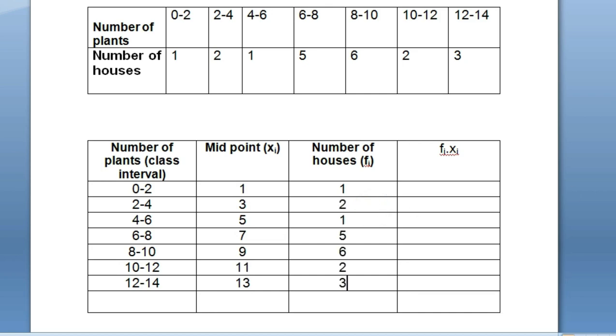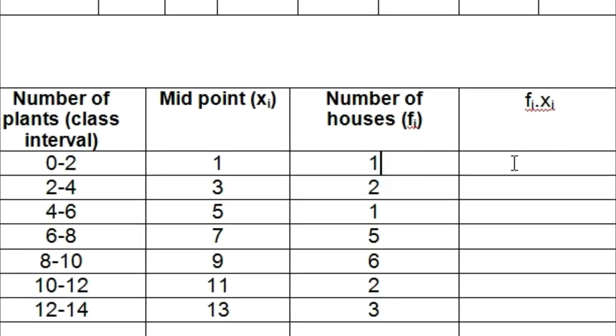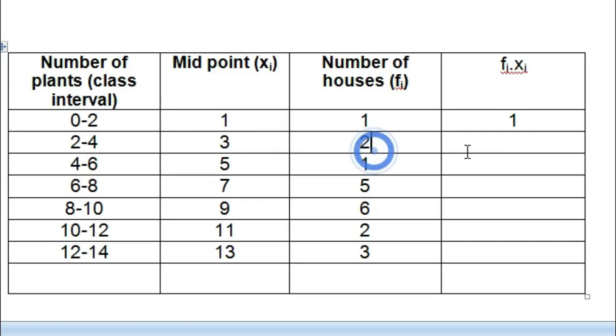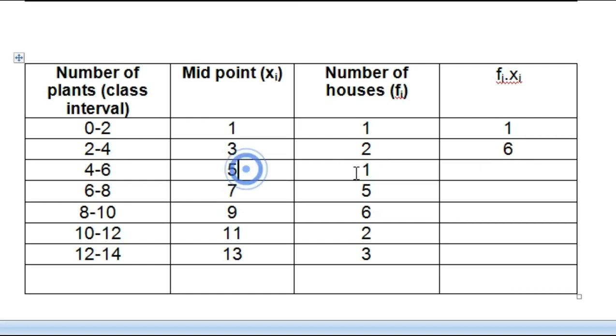Number of houses, which are called frequencies, are already given in the table. We have to find fi*xi. One into one is one, three times three... If we multiply all this, we'll be getting these values. Summation fi*xi I have already added; it is 162.